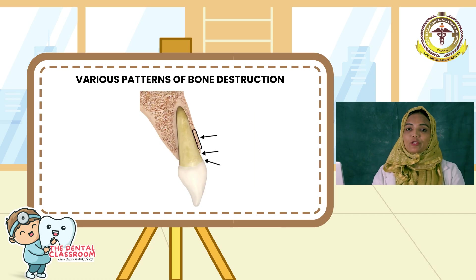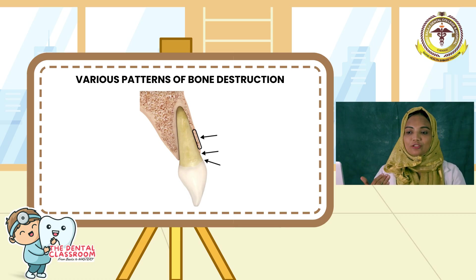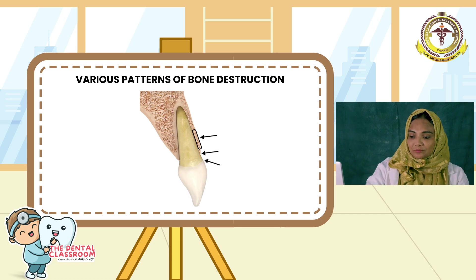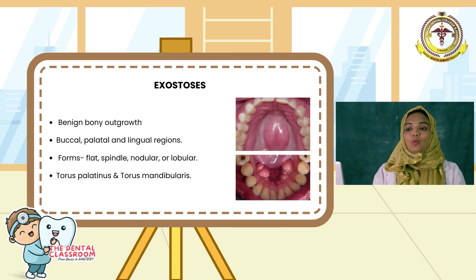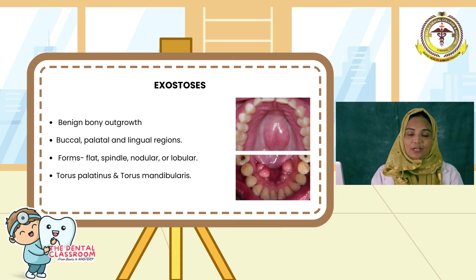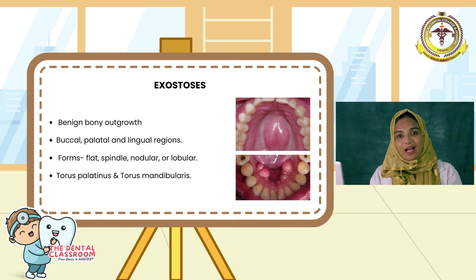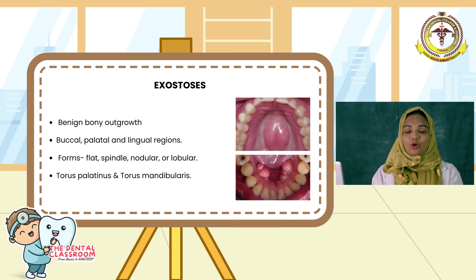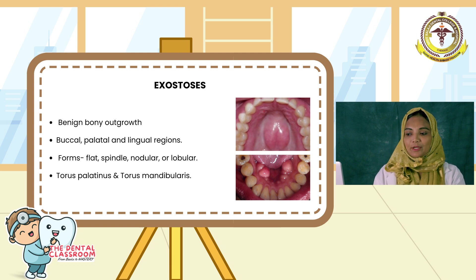Moving on to the final part — the various patterns of bone destruction. One is exostosis: they are benign bony outgrowths found in buccal, palatal, and lingual regions. It can be flask, spindle, nodular, or globular — including torus palatinus and torus mandibularis.